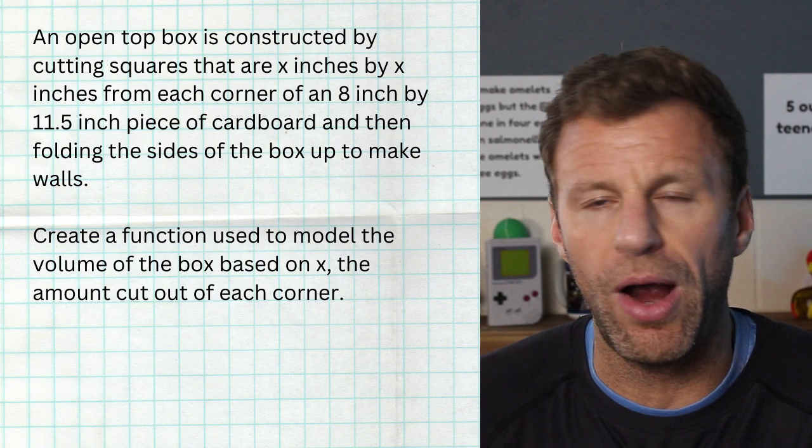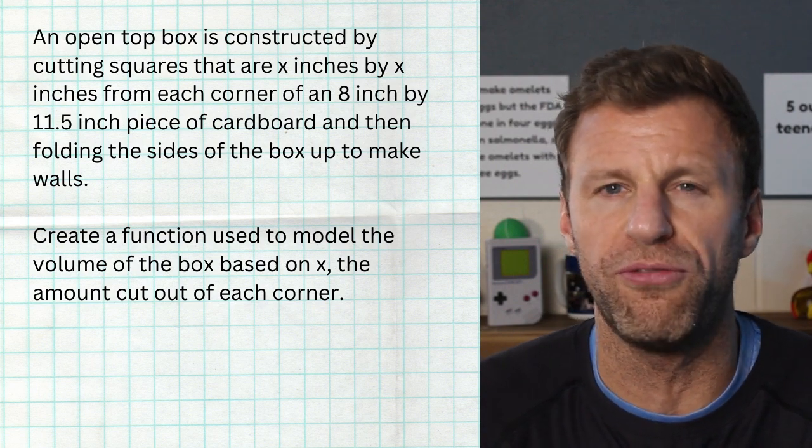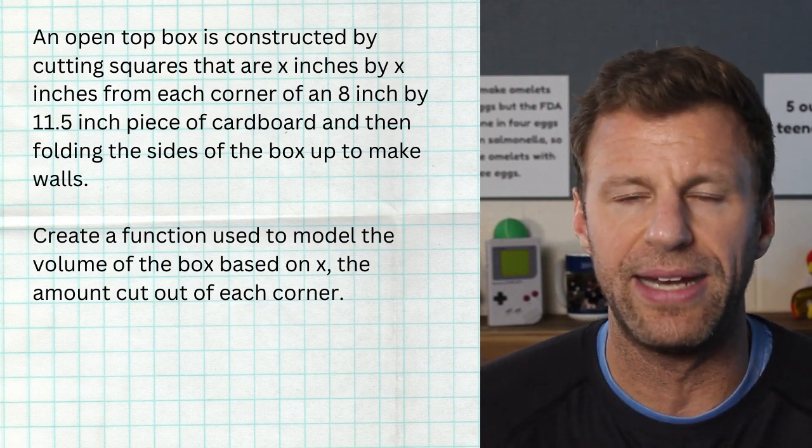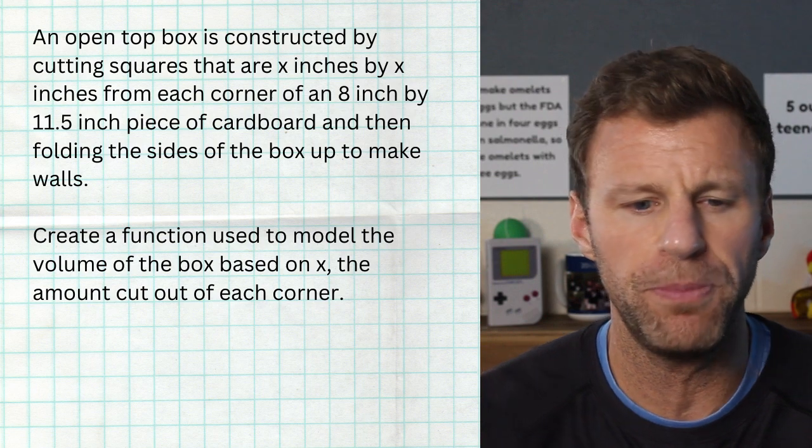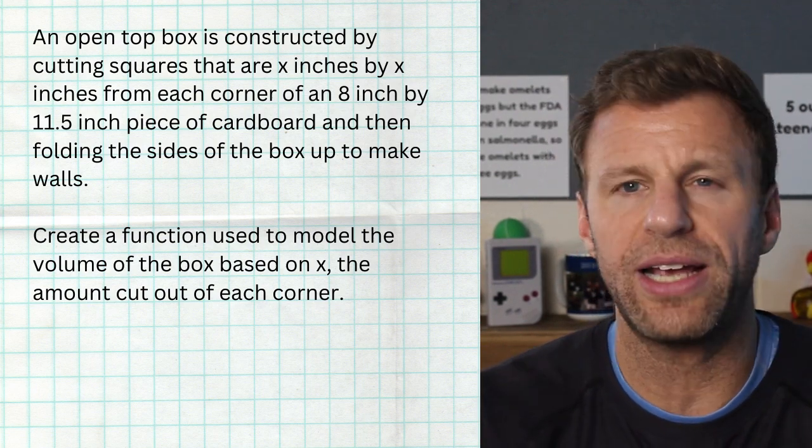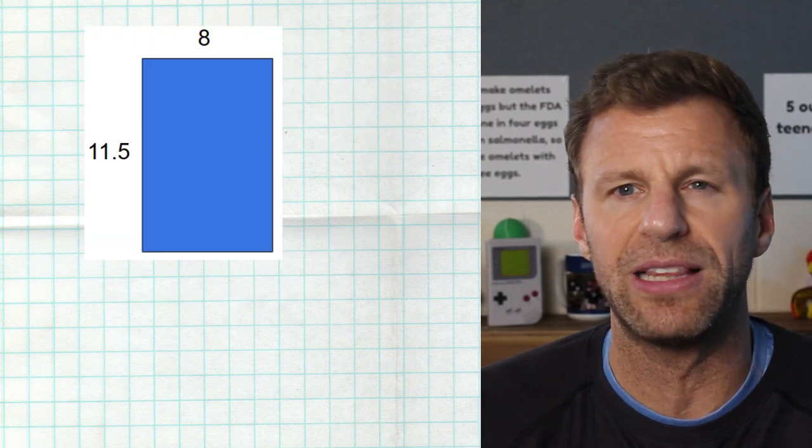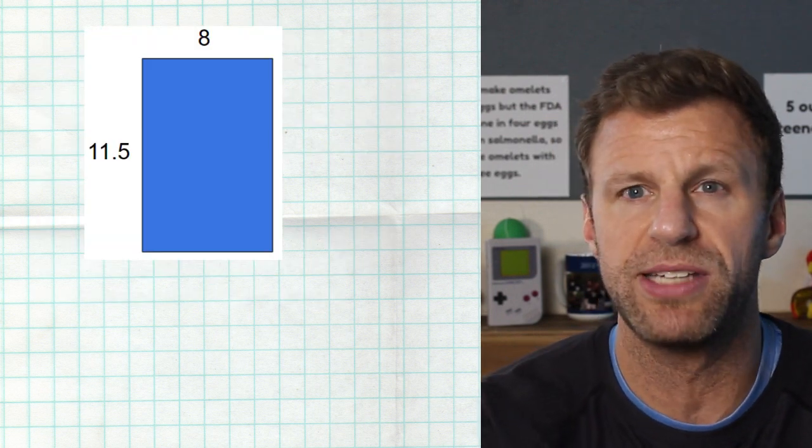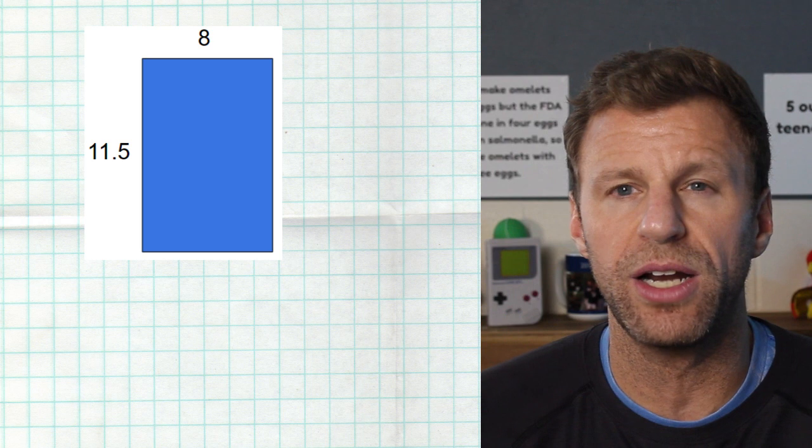So the first part says, let's create a function to model the volume of this box. Again, eight by 11 and a half piece of paper. And from each corner, we're gonna cut out x. So it's gonna look like this. We're gonna start off with that eight by 11 and a half piece of paper. And then from each corner, we're gonna cut out x.